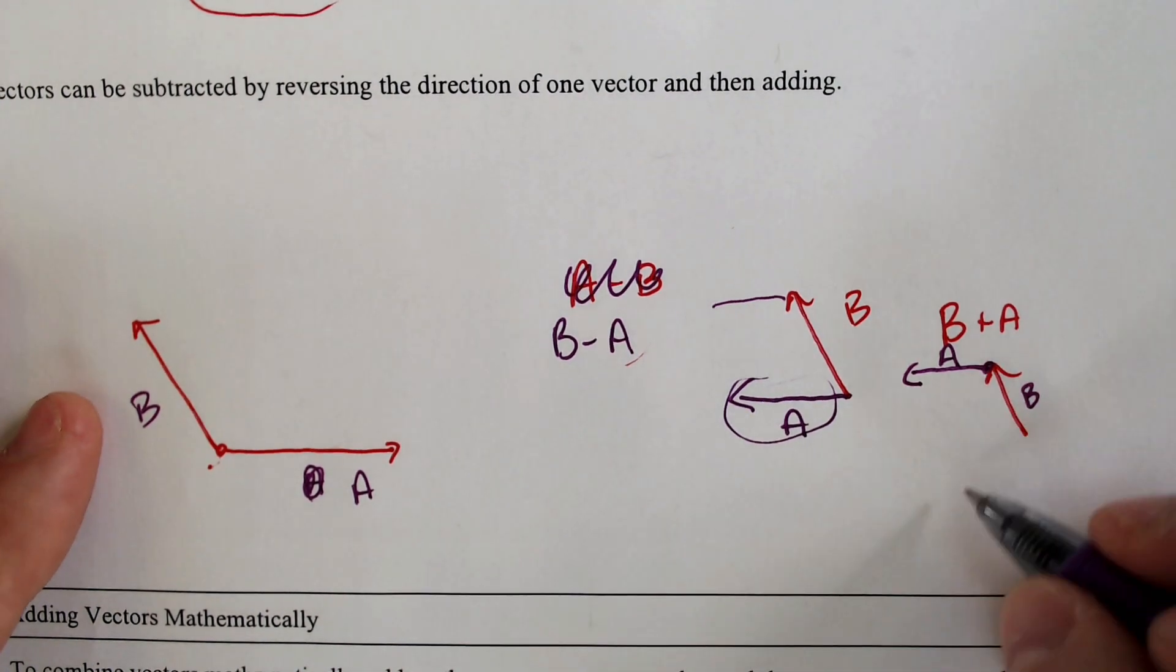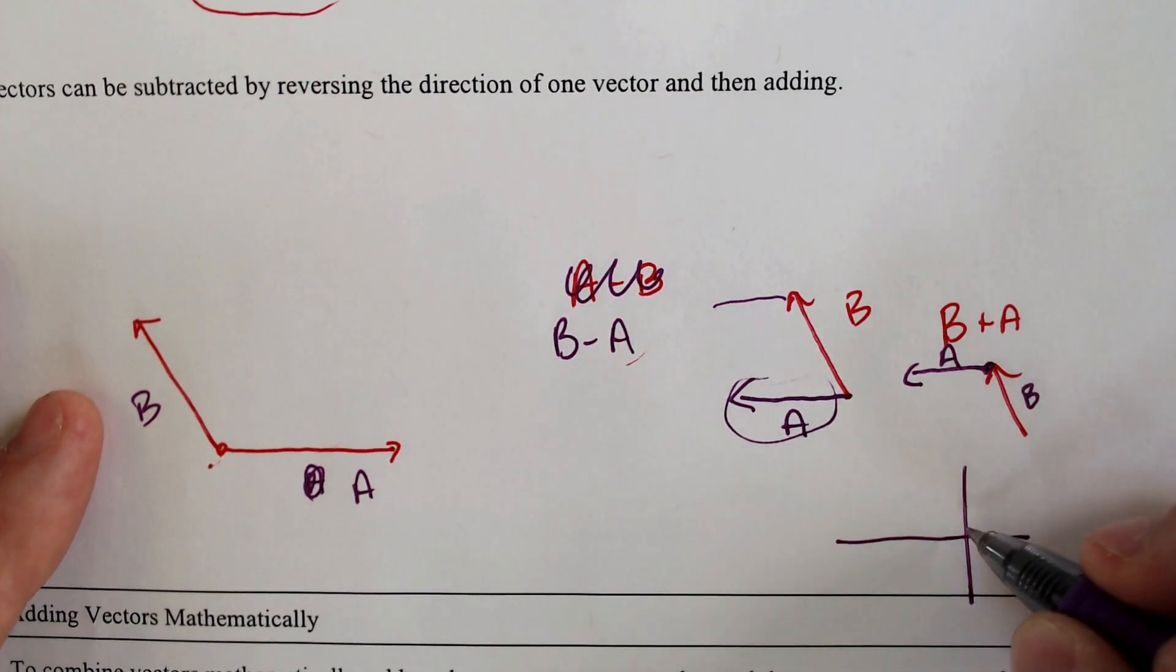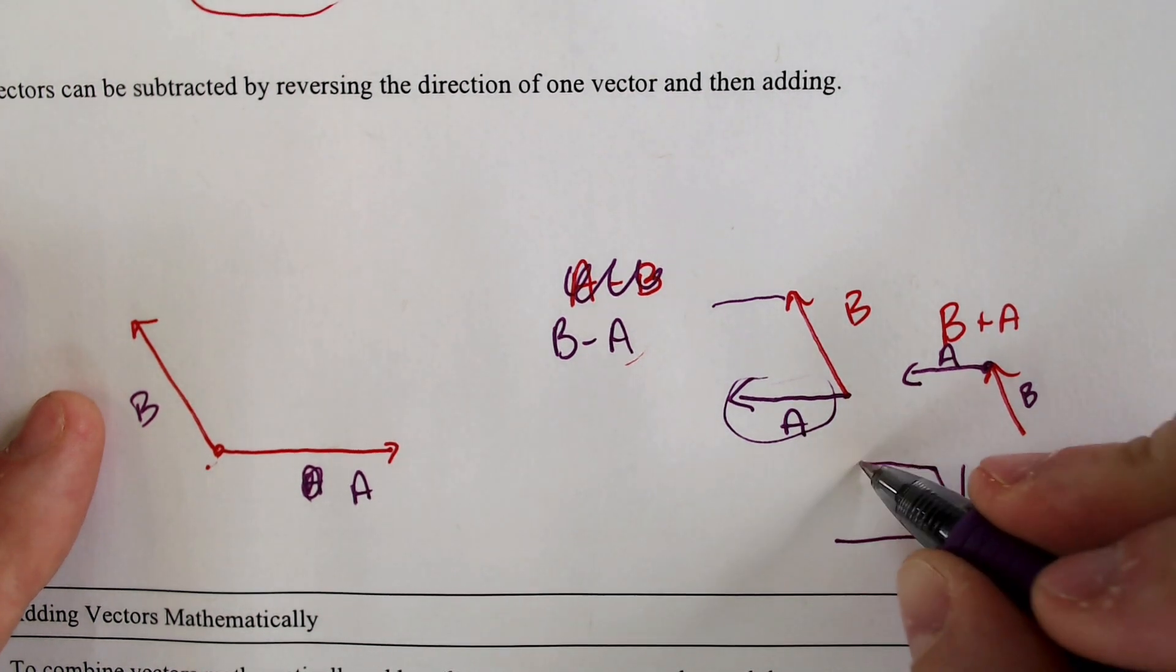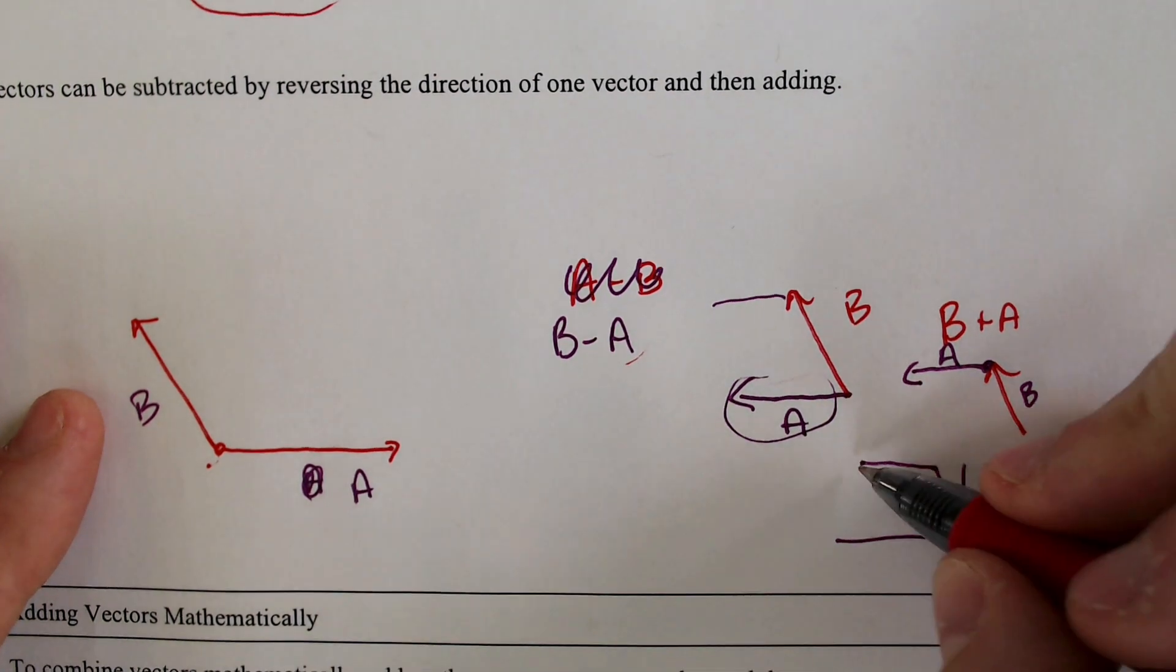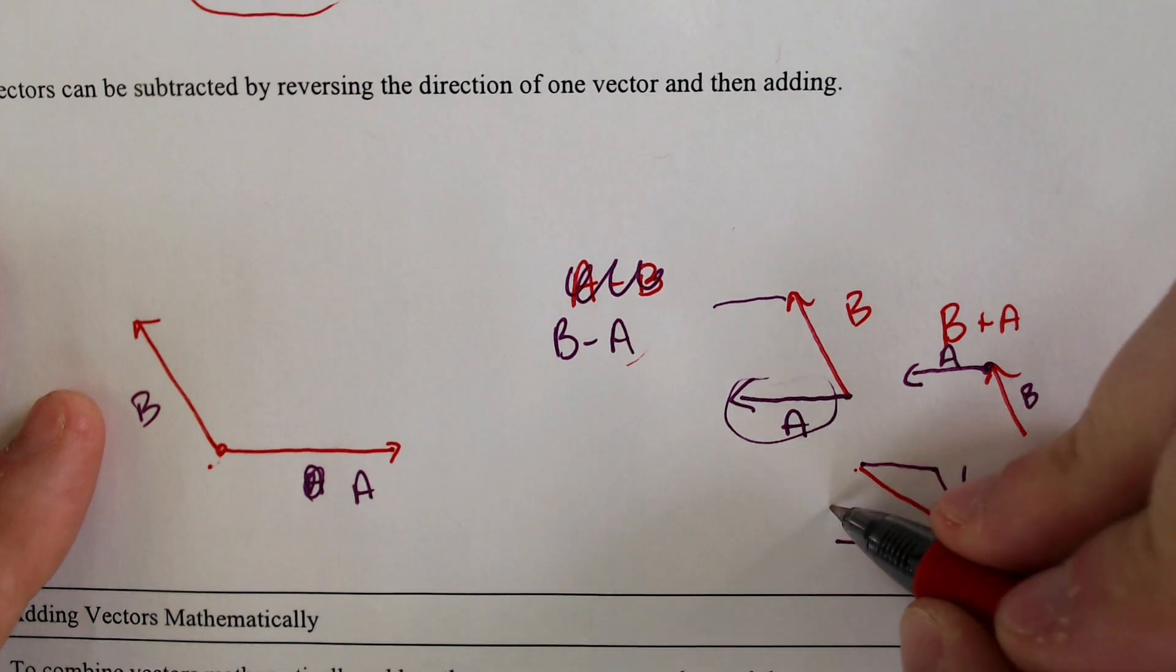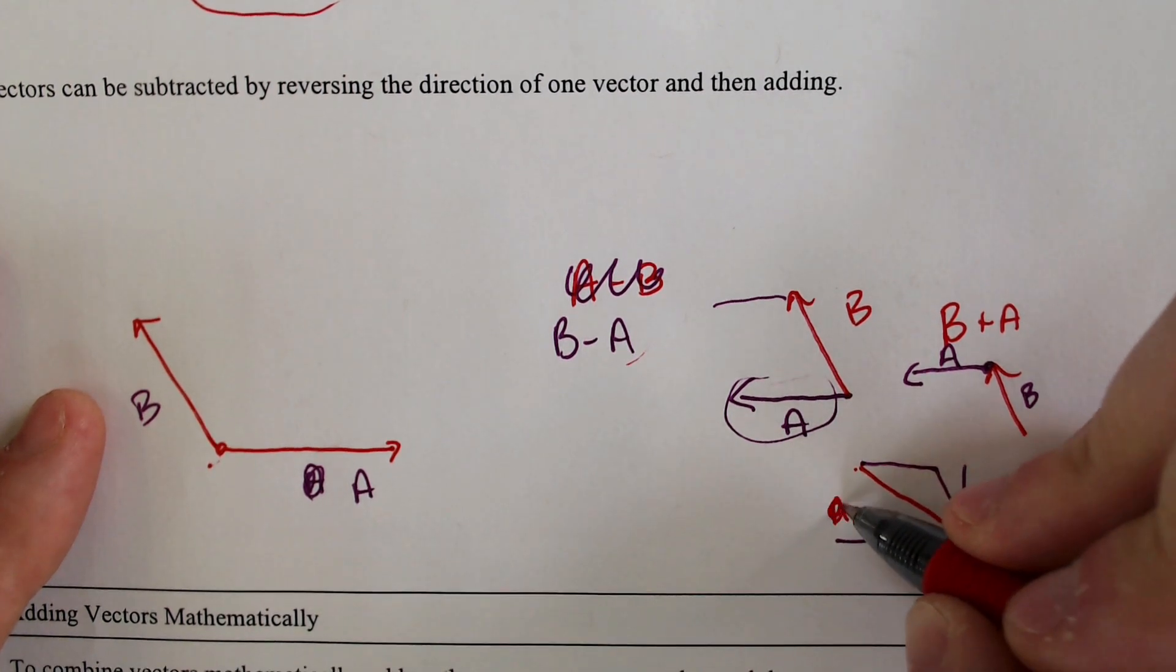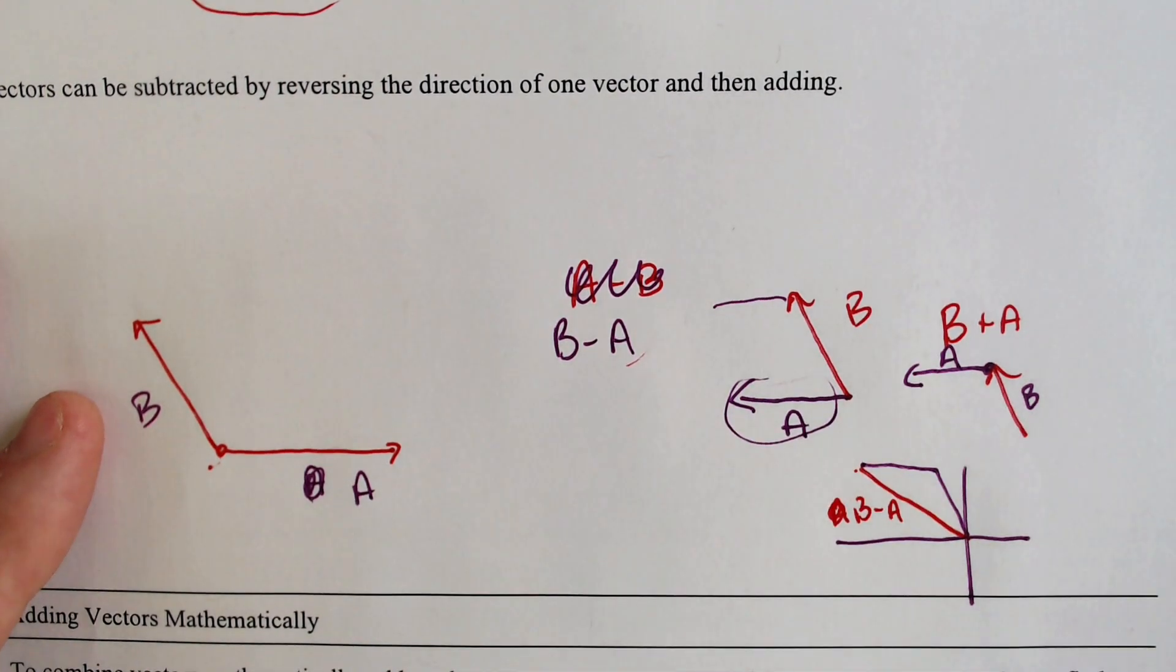And our resultant vector would be, if we look at the origin, we had B. We now have A. The resultant vector would be this guy right here. And this would be considered B minus A.